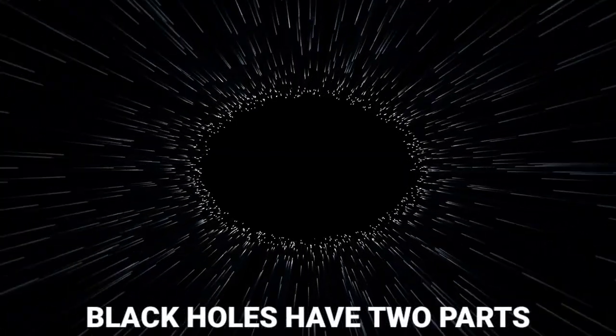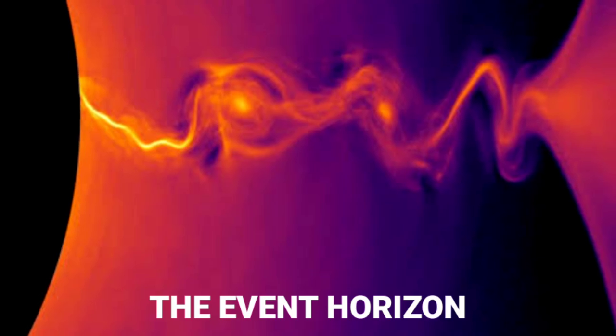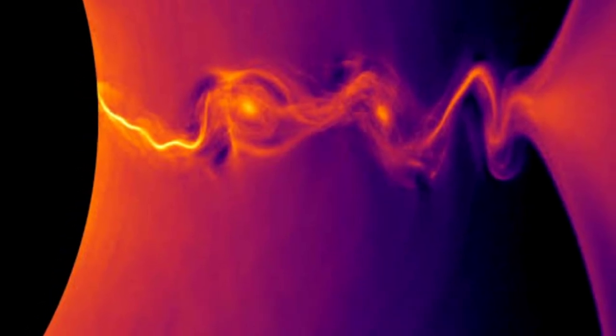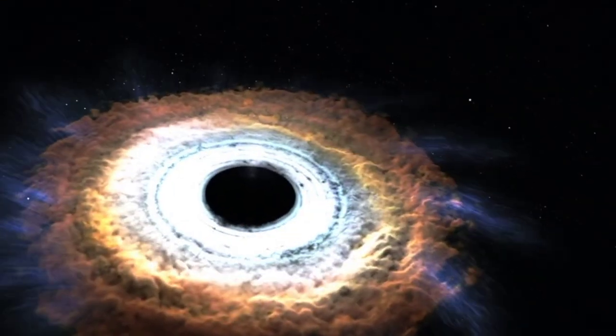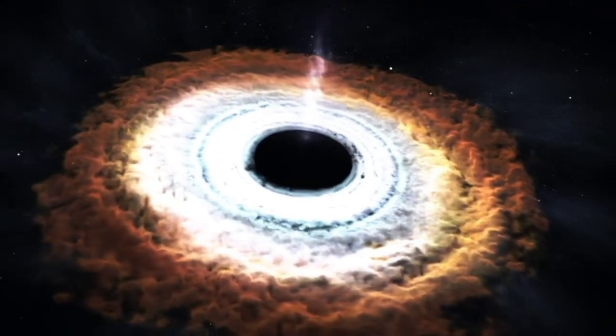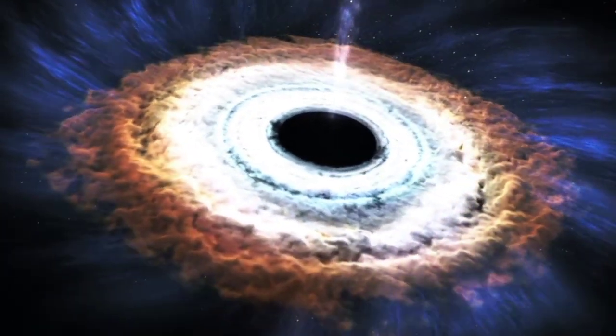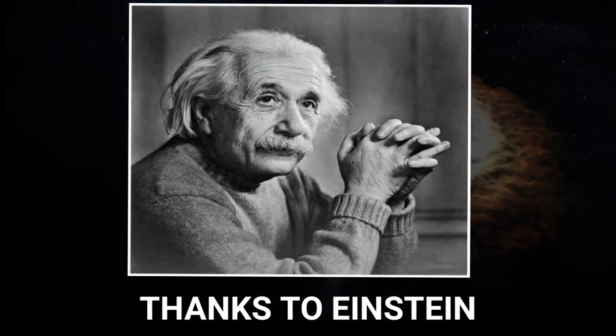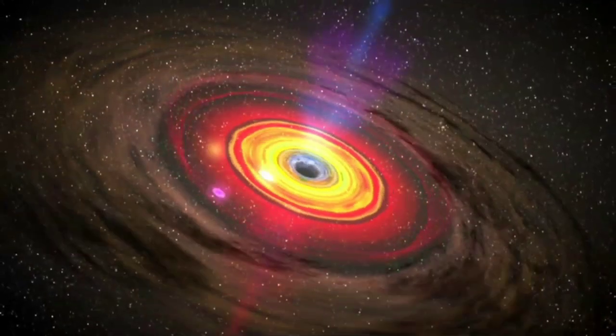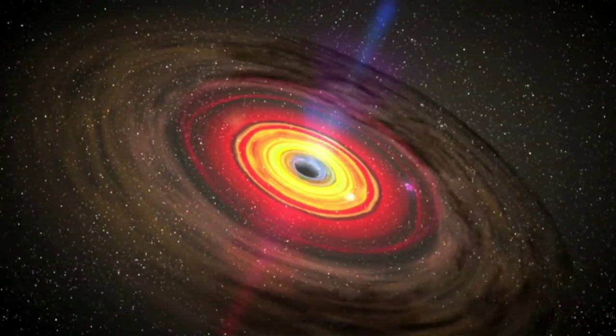Black holes have two parts. The event horizon, which you can think of as the surface, though it's simply the point where gravity becomes too powerful for anything to escape. And then at the center is the singularity, the point that is infinitely small and infinitely dense. Thanks to Einstein, we know what's on the surface of a black hole, but the singularity has been a mystery for ages.